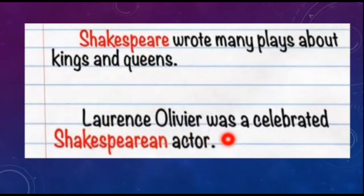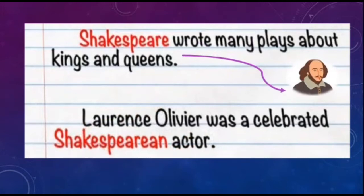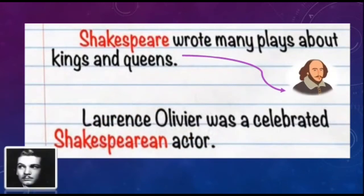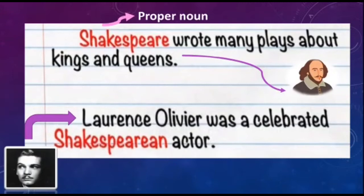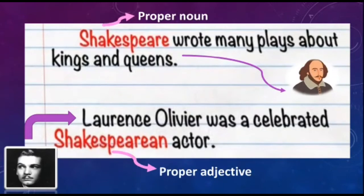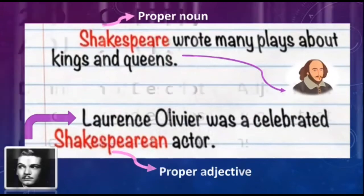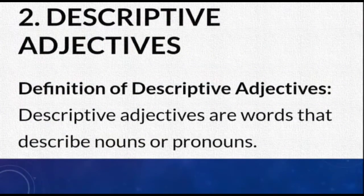In the sentence 'Laurence Olivier was a celebrated Shakespearean actor,' Shakespeare is a proper noun. The proper noun Shakespeare has been converted into the proper adjective 'Shakespearean,' which describes the actor. So proper adjectives are derived from proper nouns.